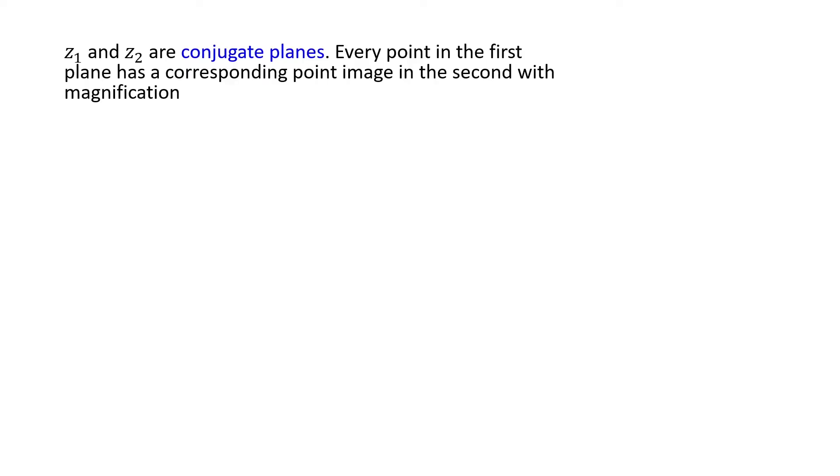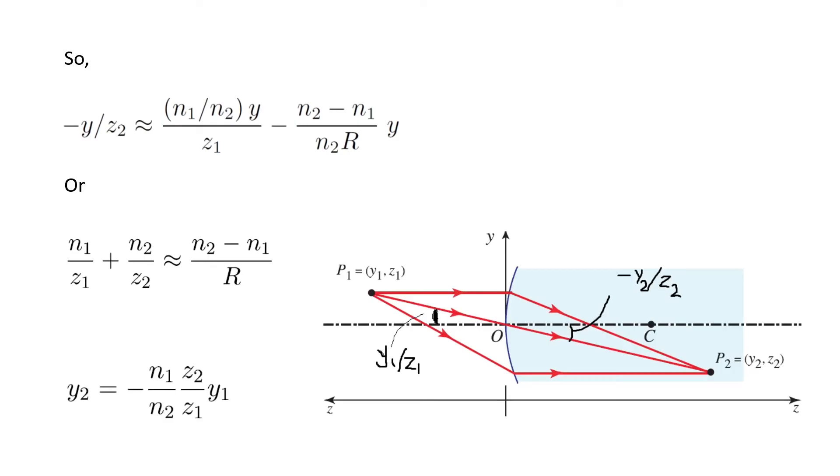z1 and z2 are called conjugate planes. Every point in the first plane has a corresponding point image in the second with magnification. Let me come back to the previous slide. This is z1 plane and this is z2 plane. It is clear that if I put my object at point P1, I will get an image at point P2 with magnification y2 is this guy.